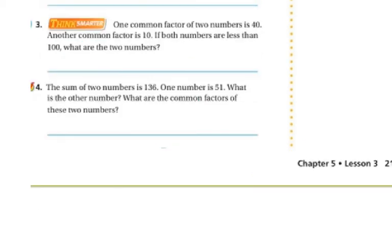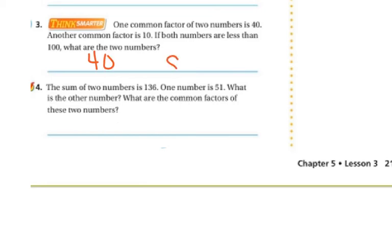One common factor of two numbers is 40, and another common factor is 10. If both numbers are less than 100, what are the two numbers? I'm just going to tell you — if 40 and 10 are the common factors and both numbers are less than 100, then the two numbers are 40 and 80.